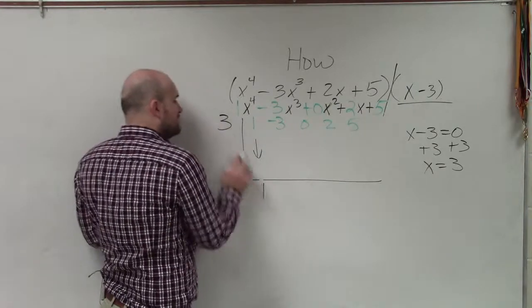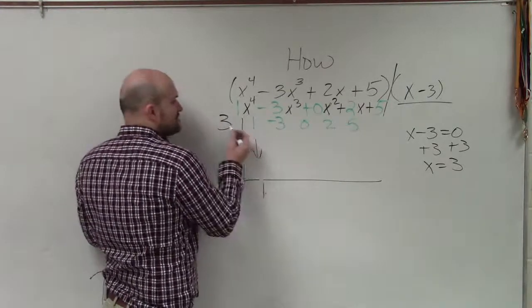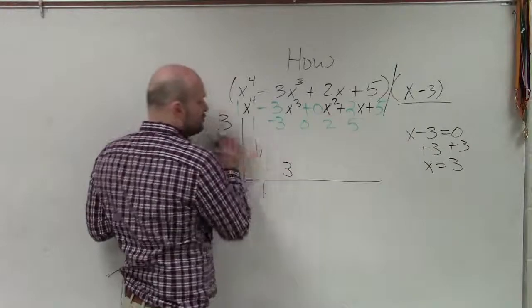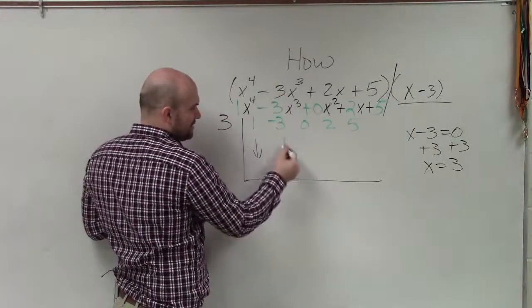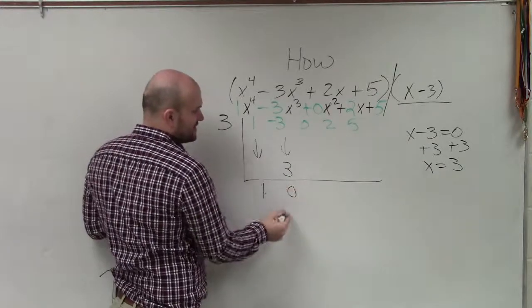Then you take this number and you multiply diagonal. 1 times 3 is 3. You put the product down. Again, add diagonally. Negative 3 plus 3 is 0.